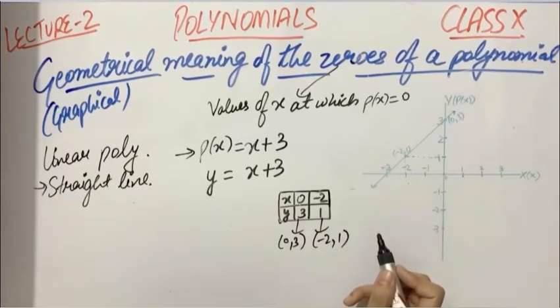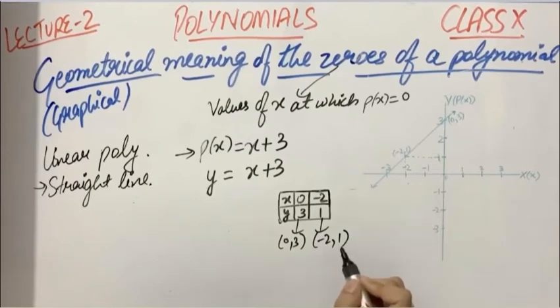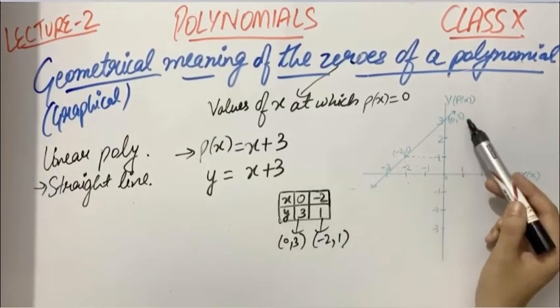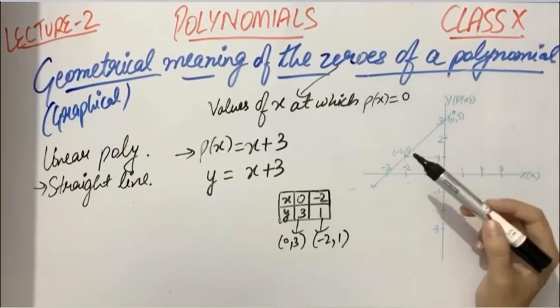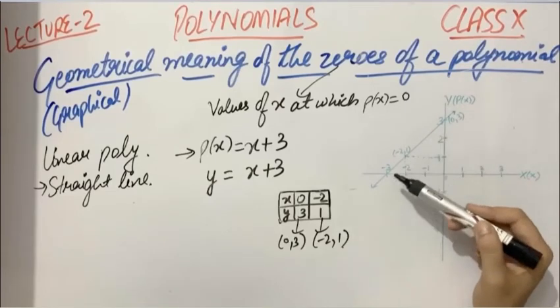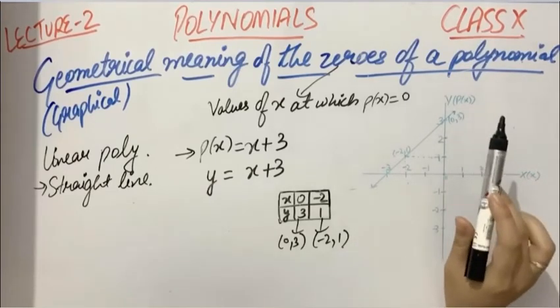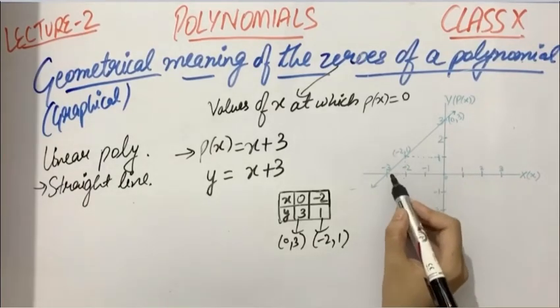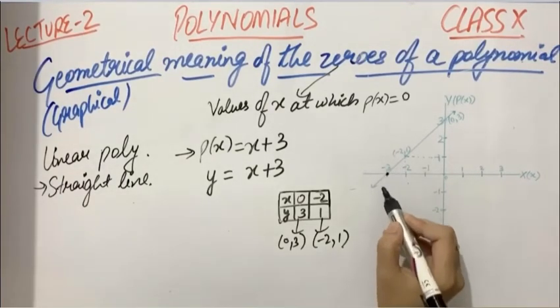Now you know that to draw a straight line, you need a minimum of two points. Now I've plotted these two points here. (0,3) will be on the y-axis because x is 0, and (-2,1) will be here. Now if you join these two points, you'll get a straight line here. Now carefully observe that this straight line intersects the x-axis at this point, and this point is (-3,0).